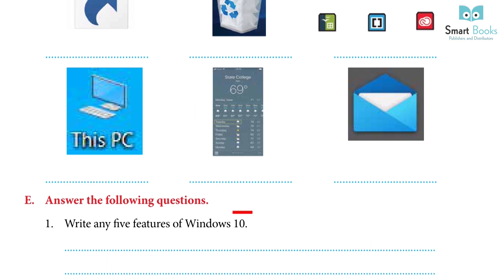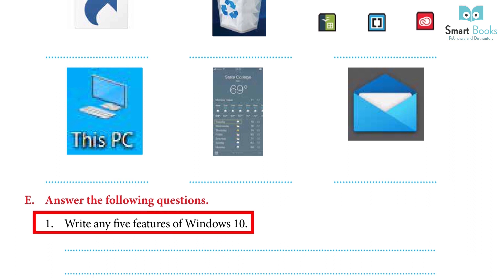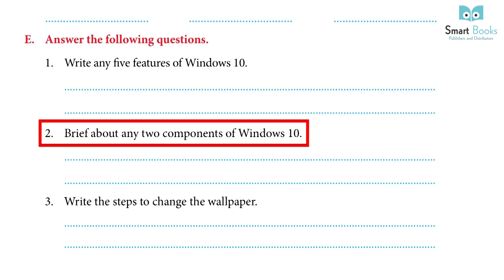Answer the following questions: 1. Write any 5 features of Windows 10 — Answer: The Start button is back. Microsoft Edge replaces Internet Explorer which experienced several security issues. Windows now offers a virtual assistant. Security features have been significantly enhanced. Upgrading is free for one year. 2. Brief about any two components of Windows 10 — Answer: Control Panel allows users to view and change basic system settings such as adding hardware, adding and removing software, controlling user accounts, and changing accessibility options. Device Manager allows the user to display and control the hardware attached to the computer and control what device drivers are used.